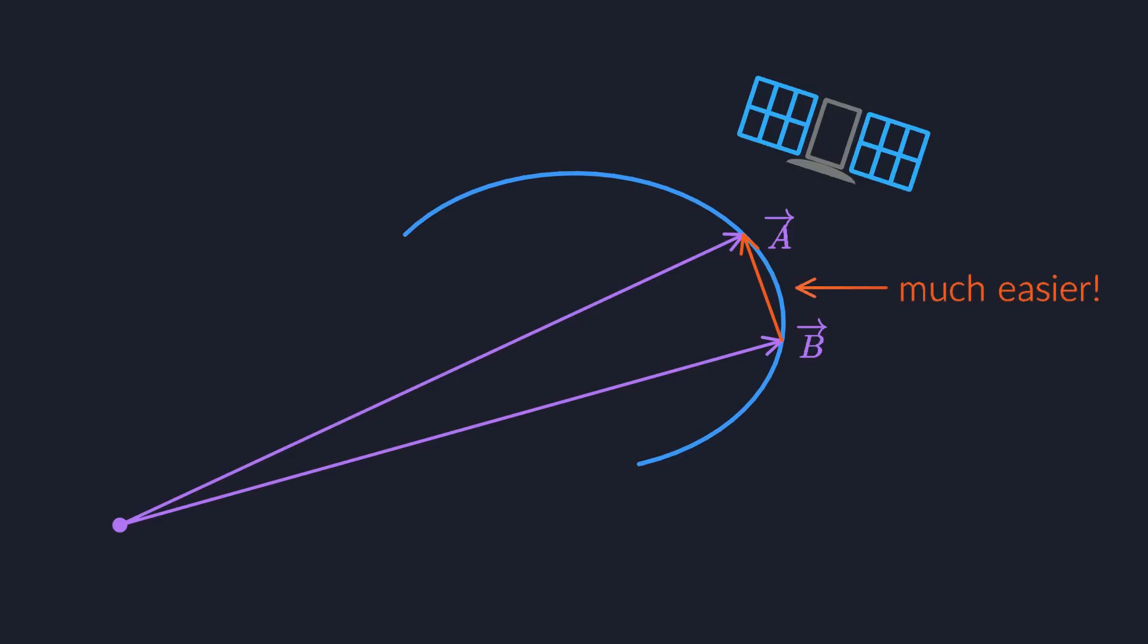As we shrink the time interval and bring the position vectors ever closer together, it's visually obvious that their difference is going to run along the trajectory. I mean, if you walk from one position to the next, you do so by walking on the orbit, right?